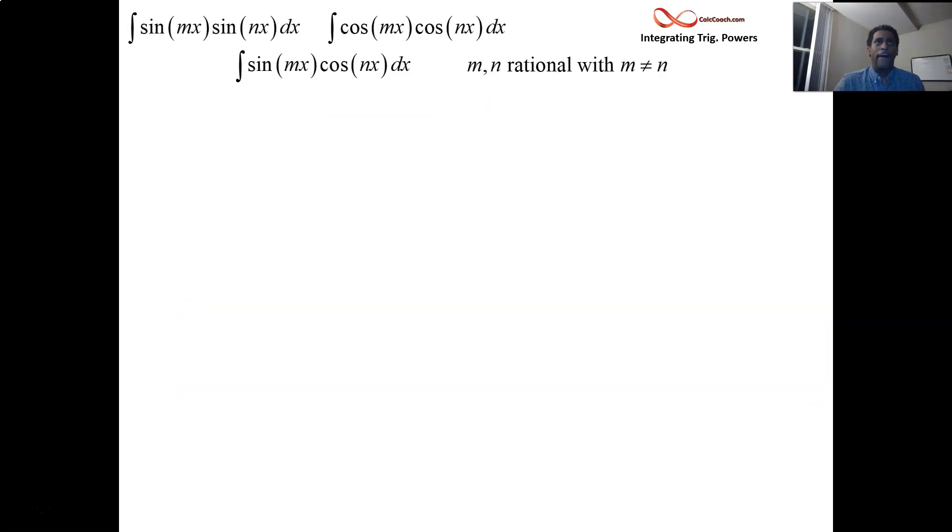So we have the three different types and we have m and n being any rational numbers. They don't have to be integers, they could be any rational number as long as they're different.